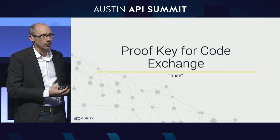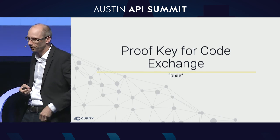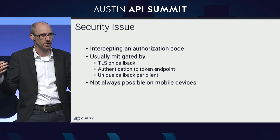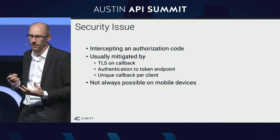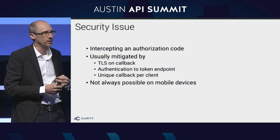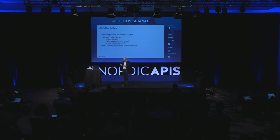Another way to go from bearer tokens to proof-of-possession tokens is PKCE. In PKCE, there's a vulnerability that exists in the callback — the redirect. If the callback is not done over TLS and it's possible for a bad actor to intercept the credentials, or if there's no authentication on the token endpoint, and if the callback is not unique per client, there exists a vulnerability where the authorization code can be stolen. This authorization code represents me delegating my rights to this application, so if someone grabs that code and presents it as me, that attacker can become me.